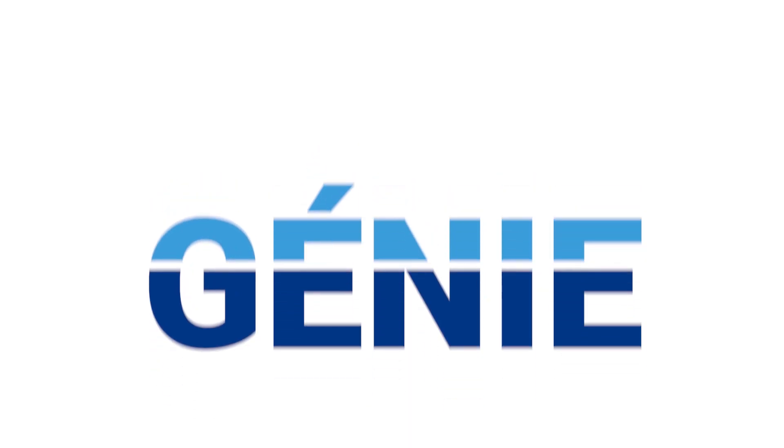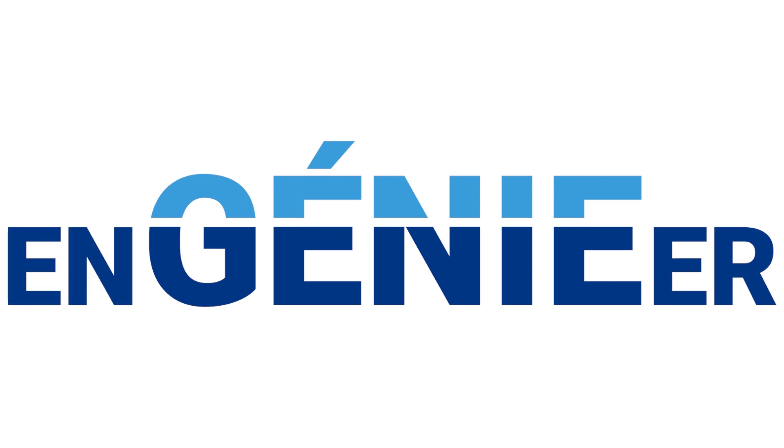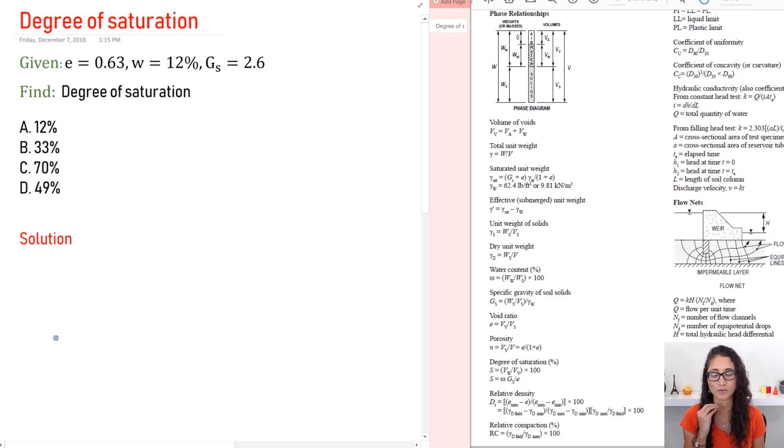Now let's get started! Okay, so we're given the void ratio is 0.63, water content is 12%, specific gravity is 2.6, and we need to find degree of saturation.